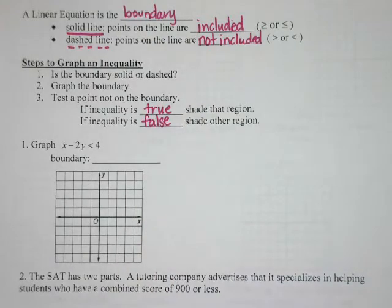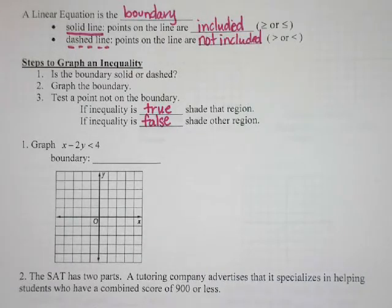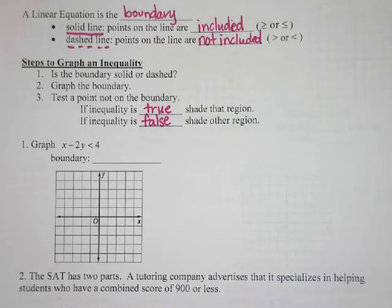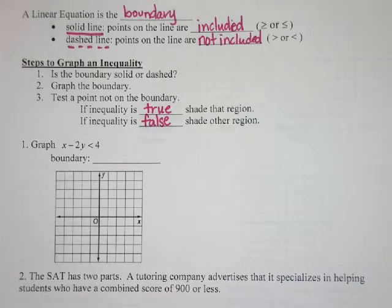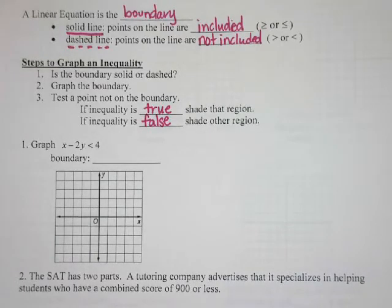Would I graph it by intercepts — see where it crosses the x and y axis? Yeah, I could do that. What's another way? Change it to y equals mx plus b. Let's do it.